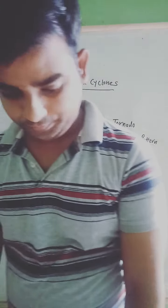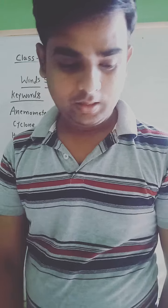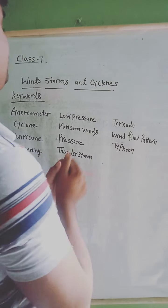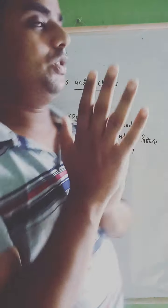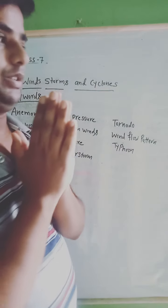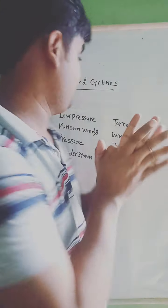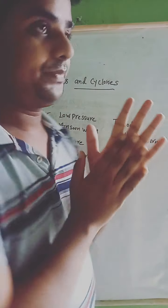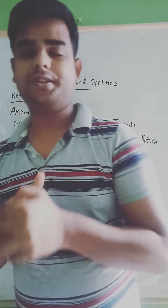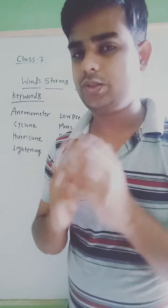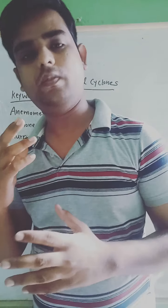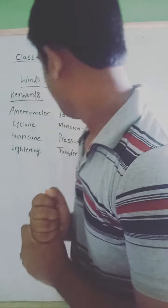Hi students, very good morning to all of you. Today in chapter Winds, Storms and Cyclones, we will study about the keywords of this chapter. We will discuss about each keyword one by one. The first keyword is anemometer. Anemometer is a device which is used to measure the speed of wind.